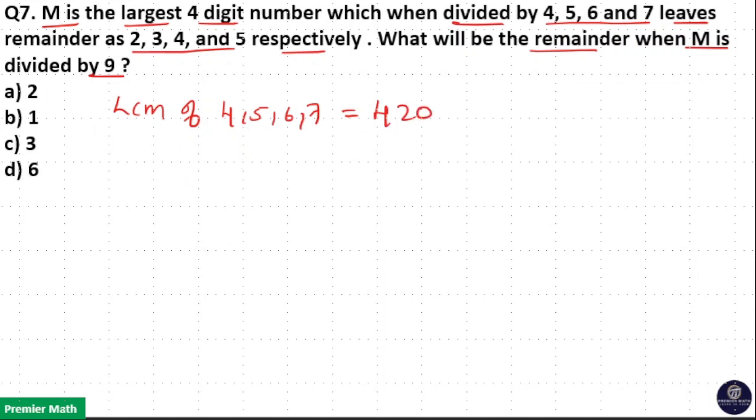Now M is the largest 4-digit number, which means M is closest to 10,000. Now take the multiple of 420 which is closest to 10,000, because multiples of 420 will be divisible by 4, 5, 6 and 7.